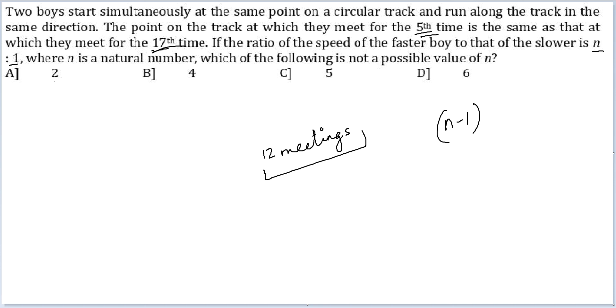For n=2, 1 is a factor of 12, so it works. For n=3, 2 is a factor of 12, works. For n=4, sorry, 3 is a factor of 12, works. For n=5, 4 is not a factor of 12, so this does not work, and therefore this should be the final answer.